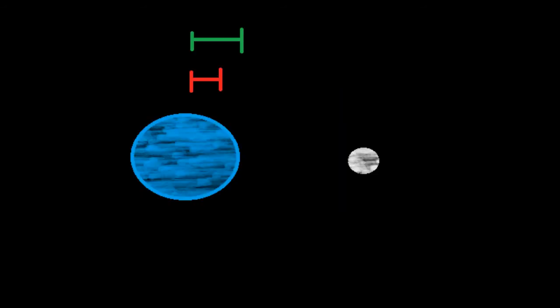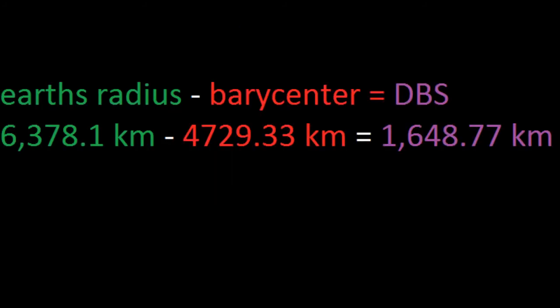So now if we take the Earth's radius minus the barycenter, we get the distance below surface, which is about 1,648.77 kilometers.